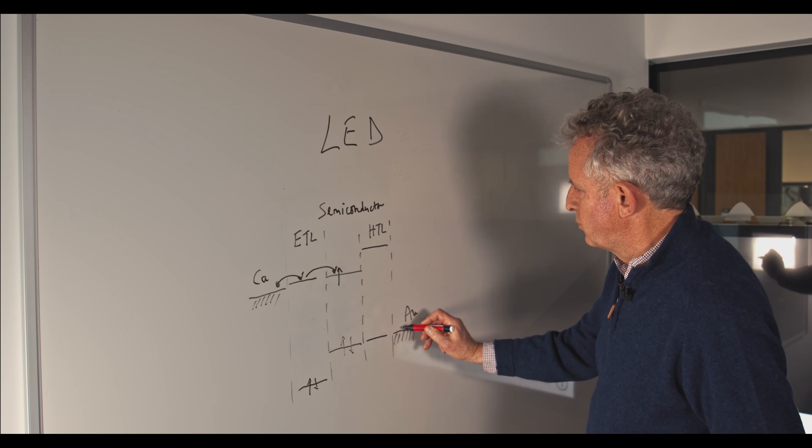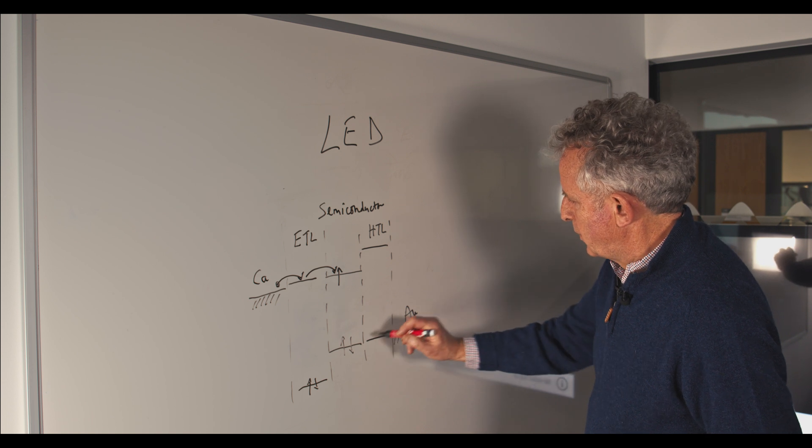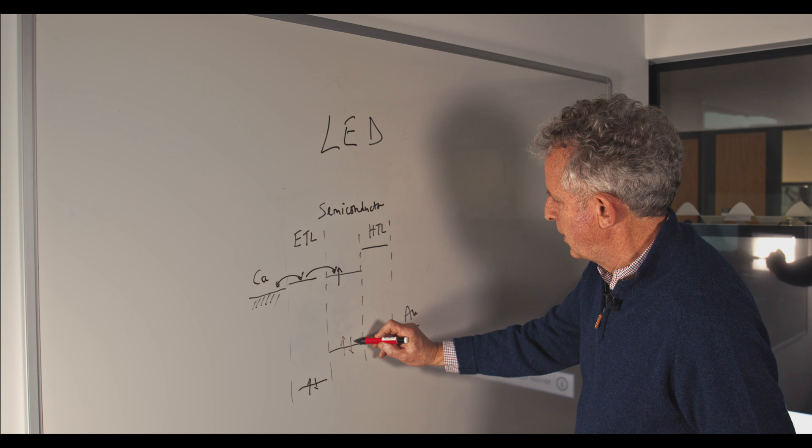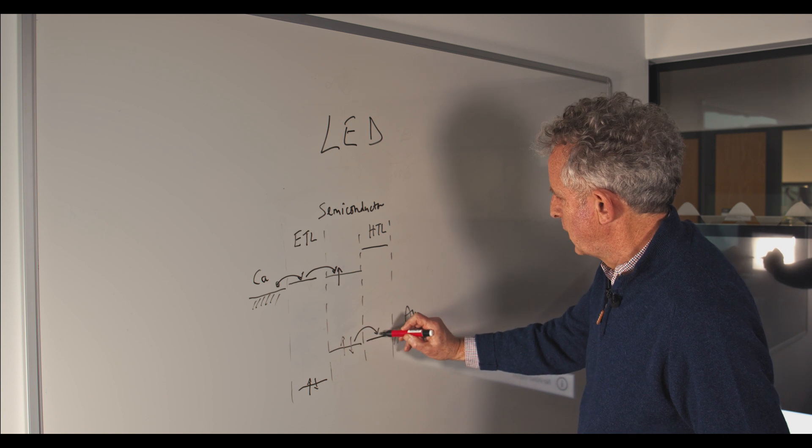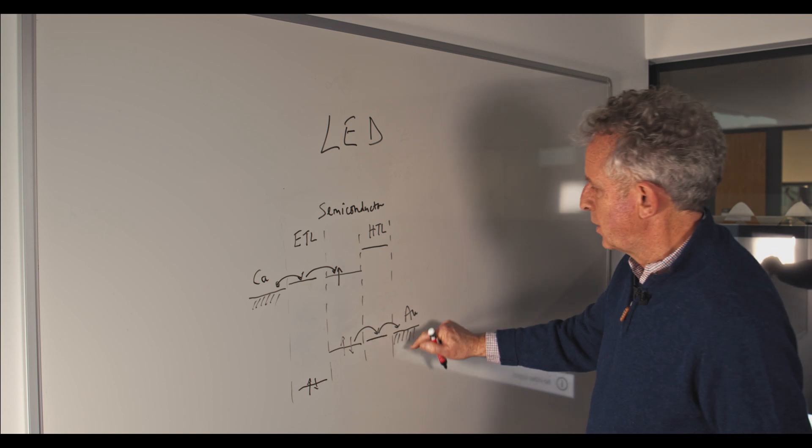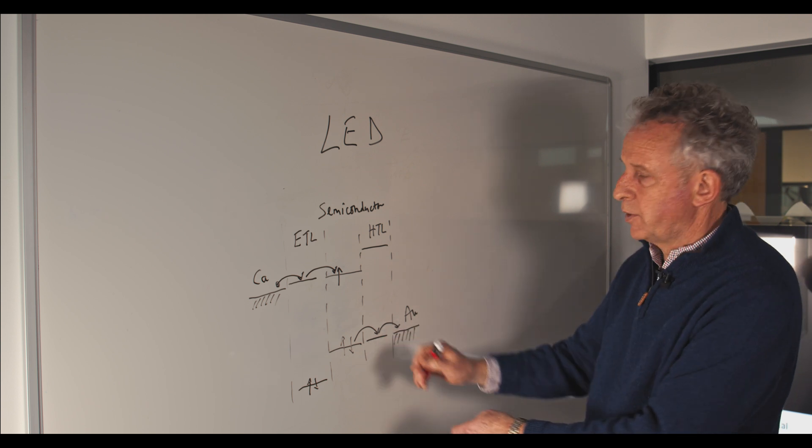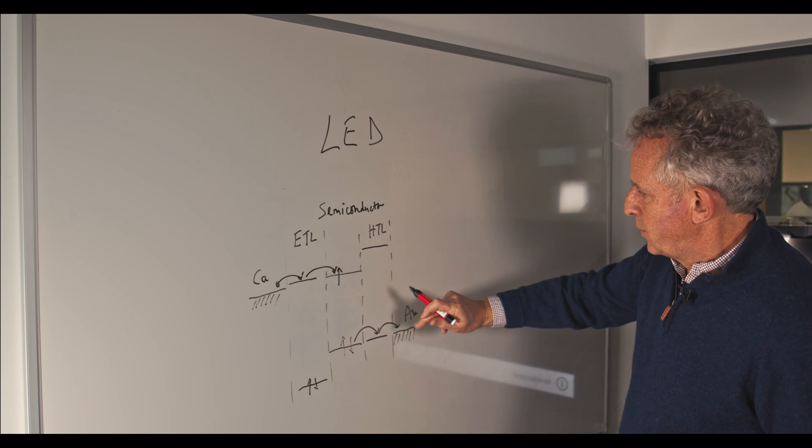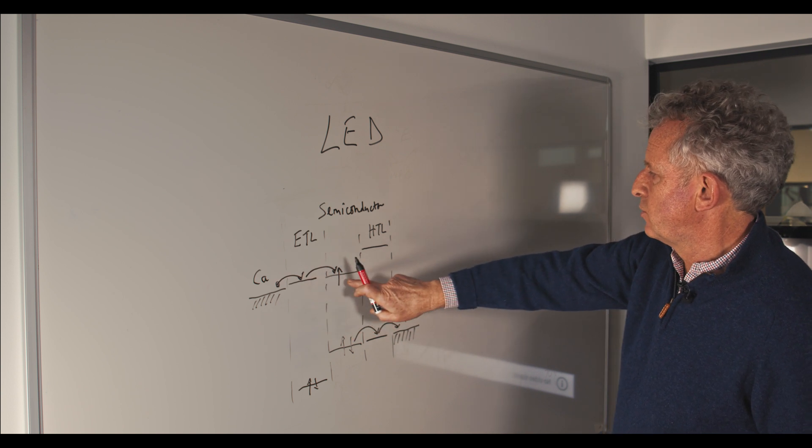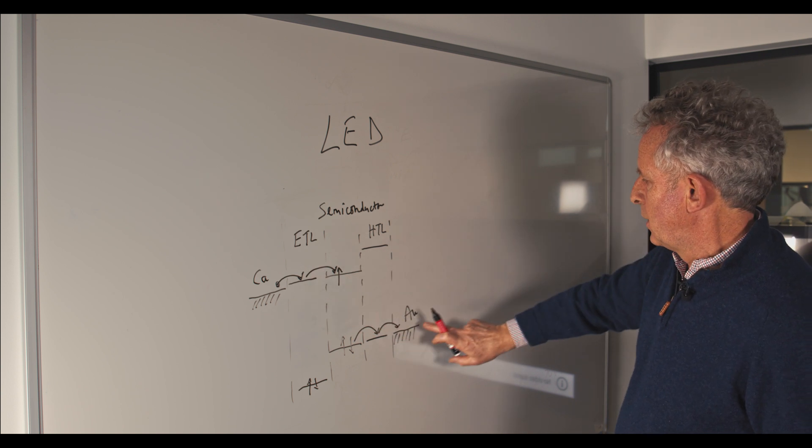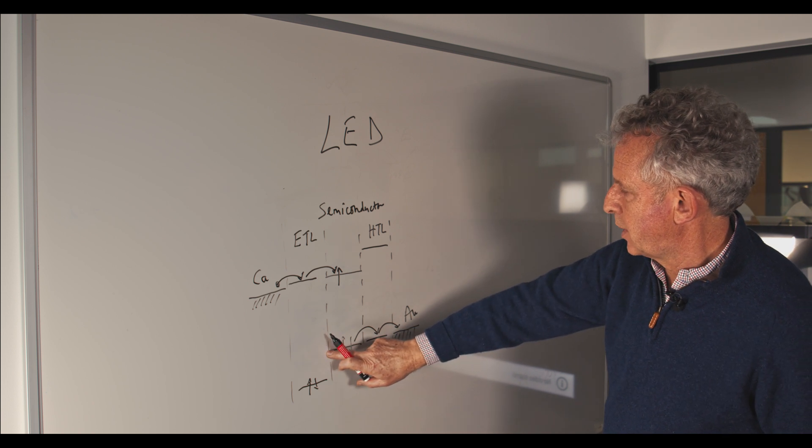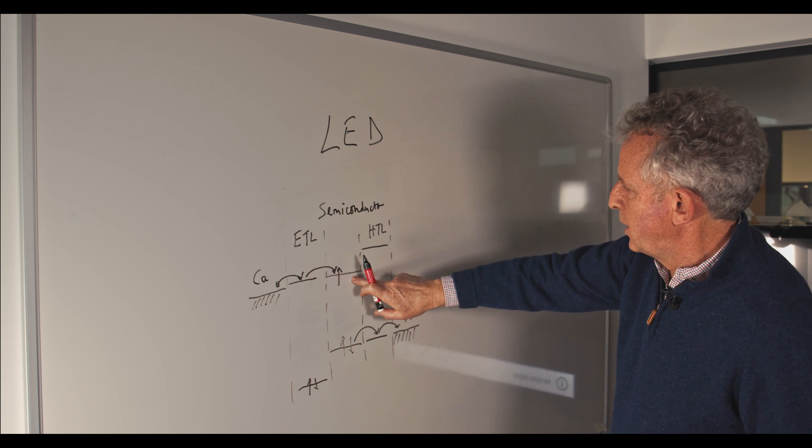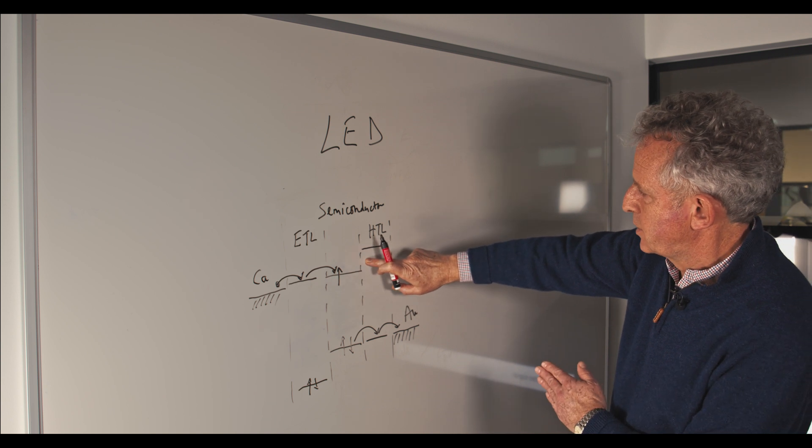In this case I would think of it as an electron process. This electron here would move out and across to the gold, that would be the process of hole injection. What we've done with this device is arranged that we have easy injection of electrons from the left and of holes from the right.